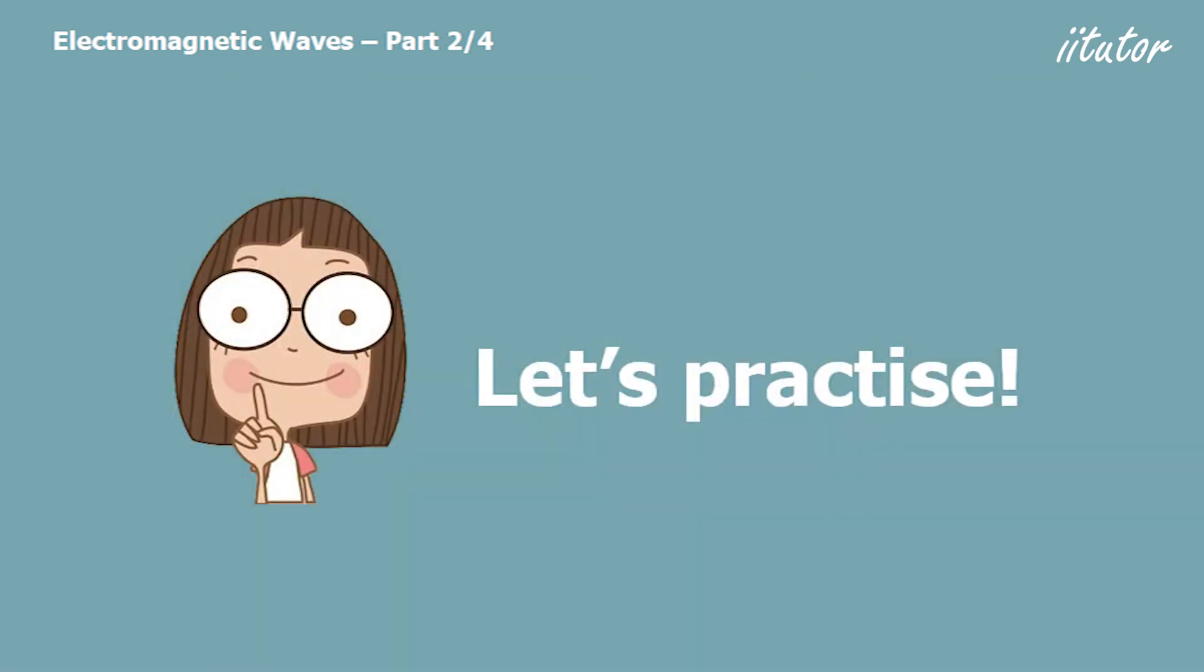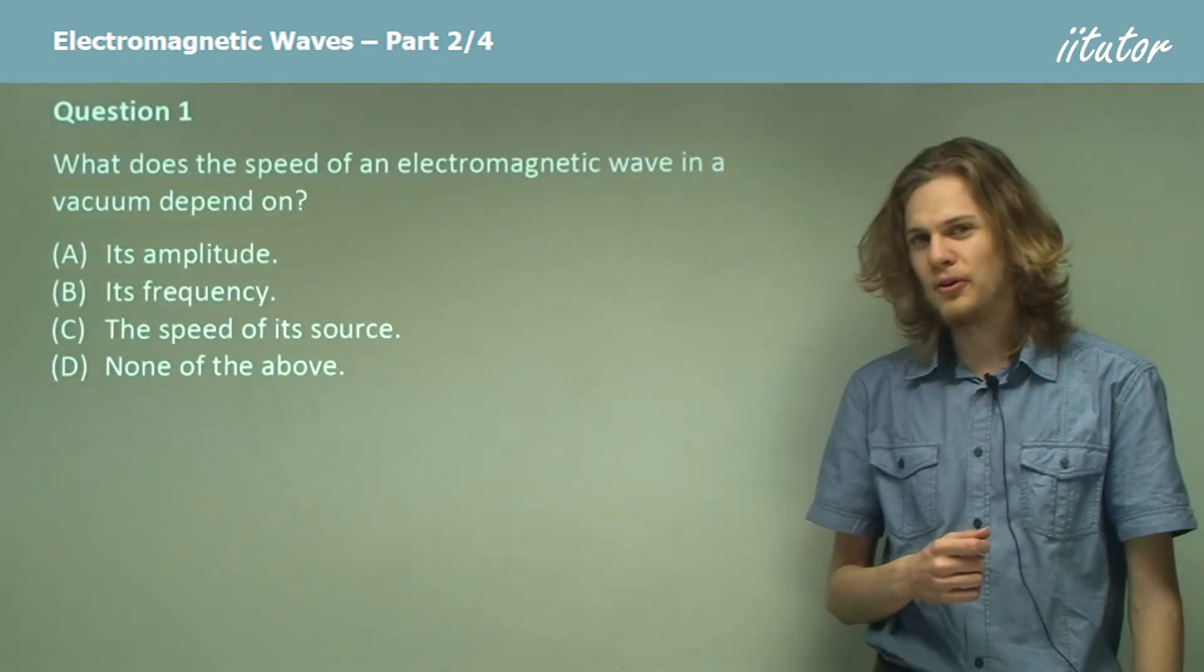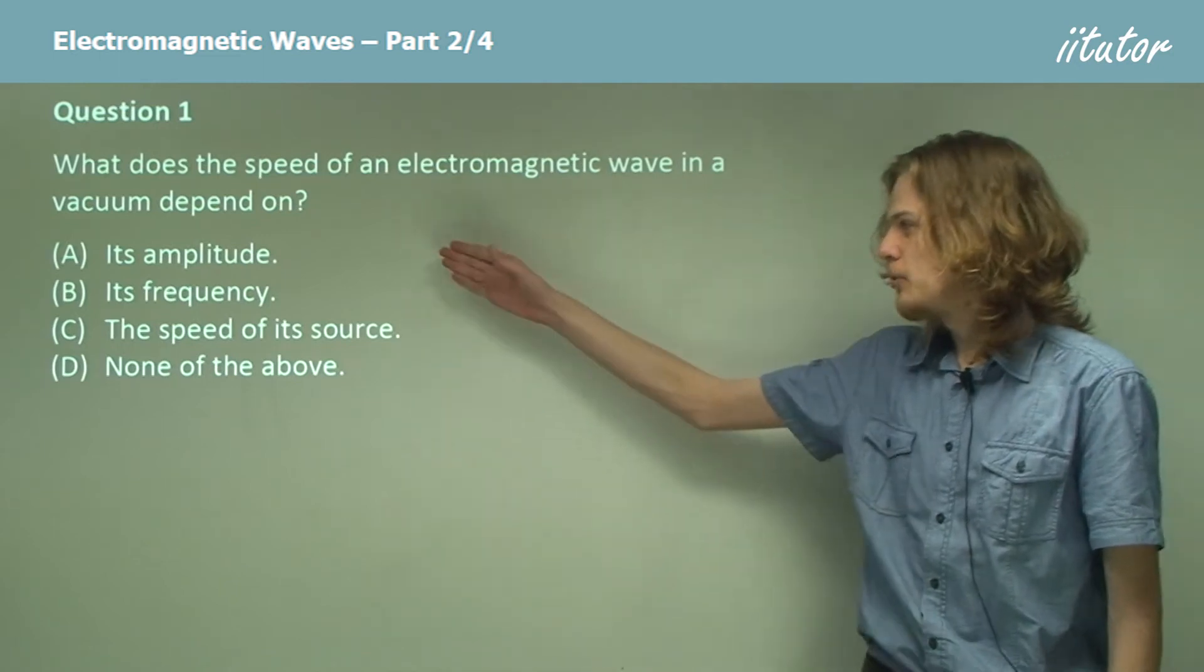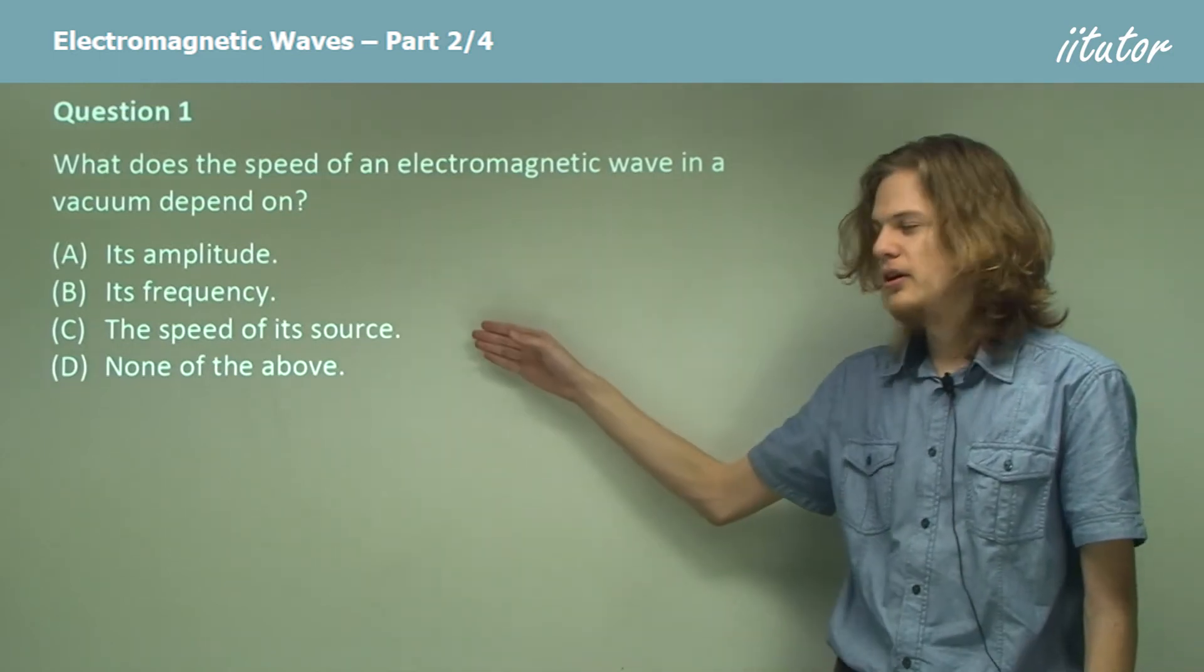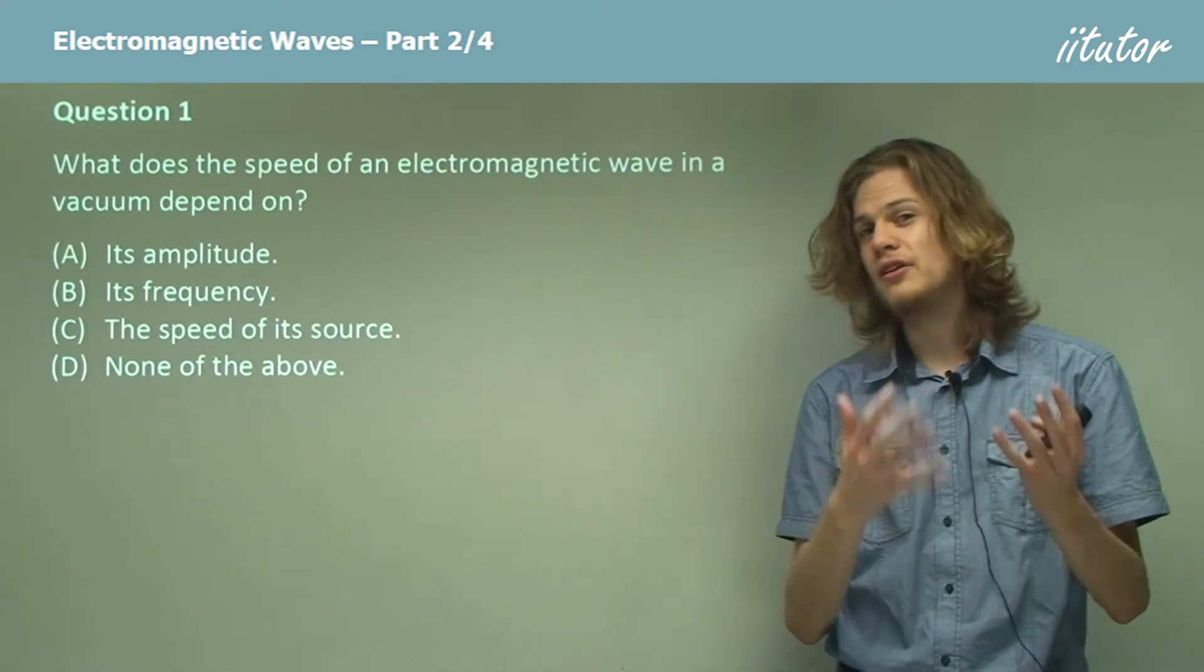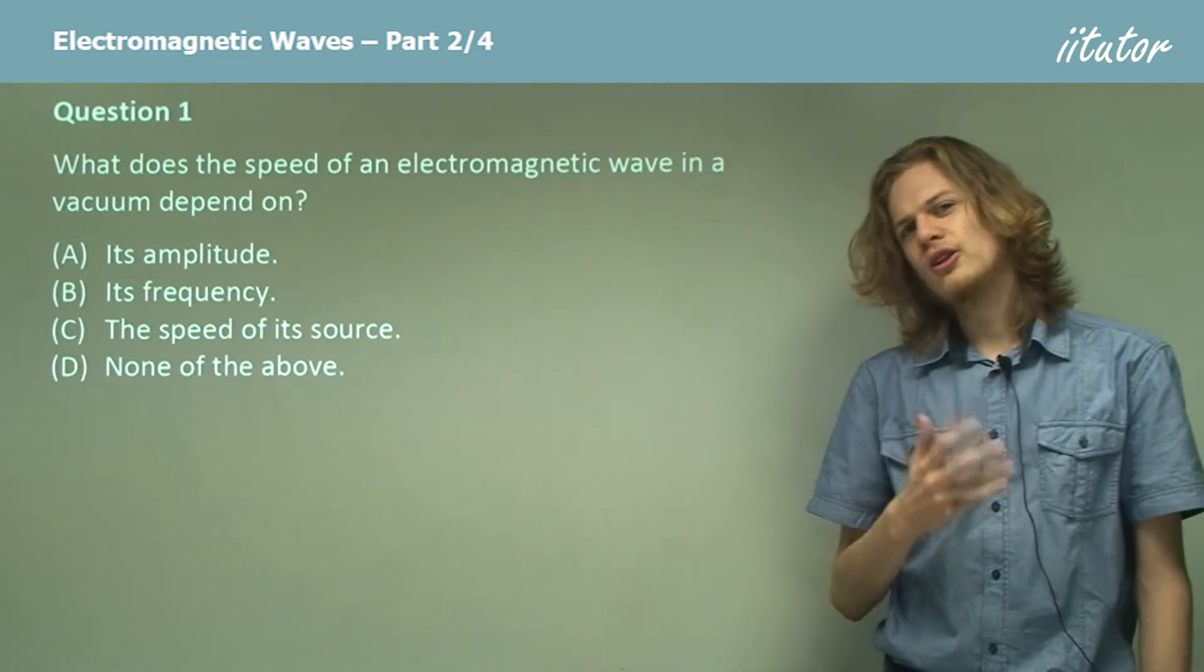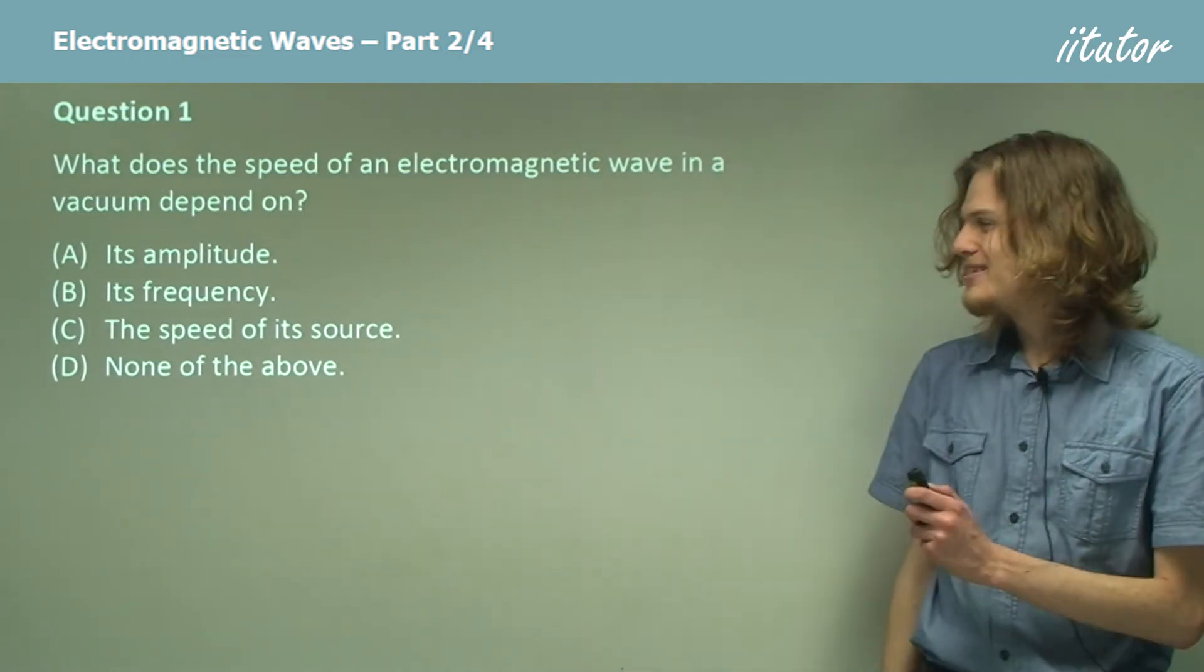So, what does the speed of an electromagnetic wave in a vacuum depend on? Does it depend on the wave's amplitude, its frequency, the speed of the source that's shining the light, or shining the electromagnetic wave, or none of the above? So, let's go through the options. Its amplitude.